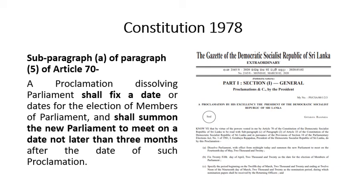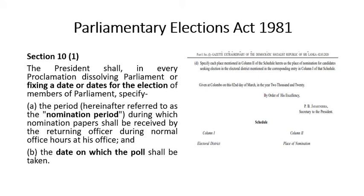The proclamation must: first, state that Parliament is dissolved; second, specify a date or more than one date to conduct the elections of members of Parliament; and third, summon the new Parliament to meet on a date not later than three months from the date of such proclamation. Additionally, a proclamation is made under the Parliamentary Elections Act, Section 10-1.